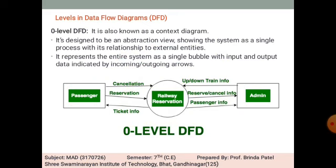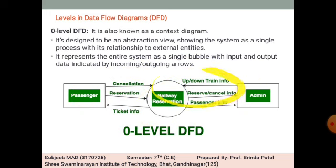In this 0-level DFD, the relationship between passenger and admin entities with the railway reservation system is shown. A passenger can make a reservation, cancel a ticket, and collect ticket information like source and destination. An admin can display train information such as timing changes, cancel or book reservations, and access passenger information. This is one single scenario of a railway reservation system.